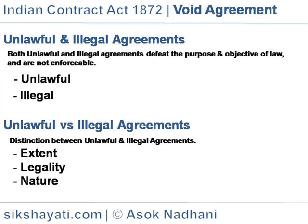Example: X assaulted Y, snatched goods from Y, and sold the goods to Z. Assault by X is illegal and selling the robbed goods is illegal. Contravention of copyright is unlawful, but selling books which remain infringed may not be illegal.